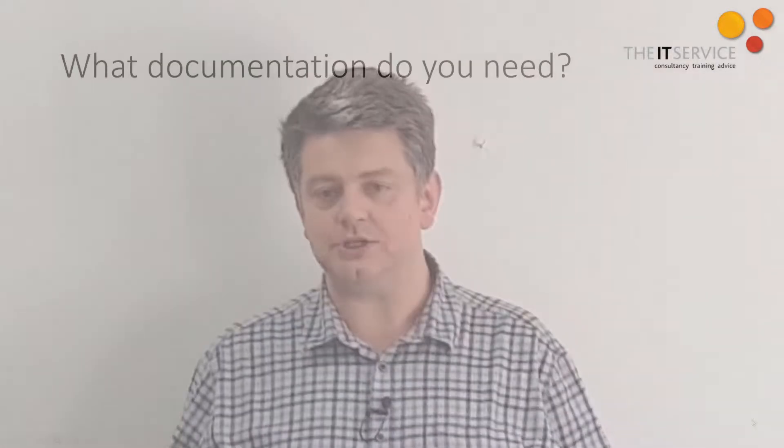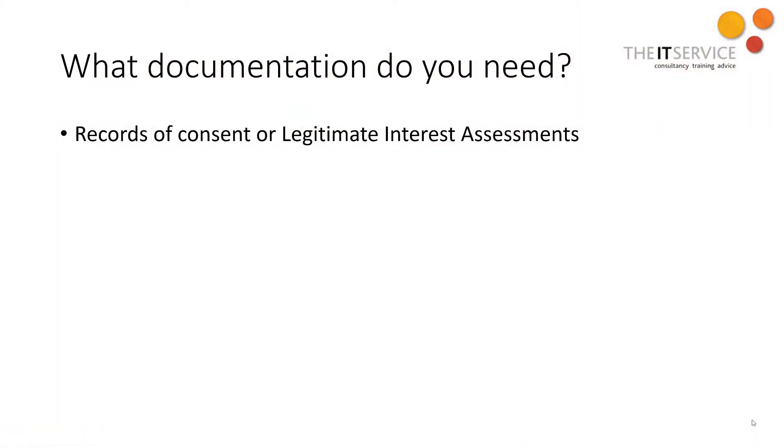Coming up later in this video, we're going to look at what rights people have under the GDPR, and I'll tell you that story of the large fine for sending a mistaken email. But before that, I want to go through some of the key documentation you need to have in place to comply with the GDPR. Firstly, if you've decided to use consent as your lawful basis, you need to keep records of who's consented, and when, and what they've consented to. If you're using legitimate interests, you'll need to document that three-part legitimate interest assessment, so you can show what your interest is, why the processing is legitimate and proportionate, and why it doesn't override the subject's rights and freedoms.